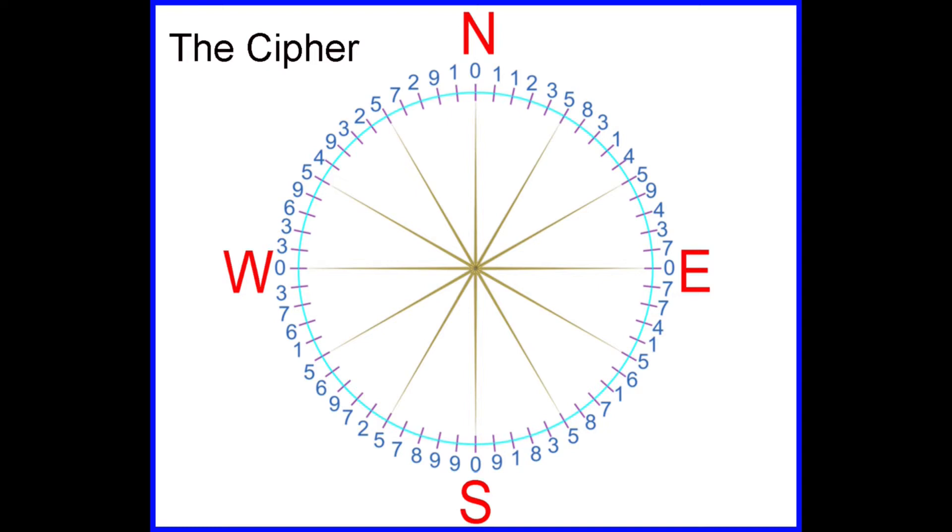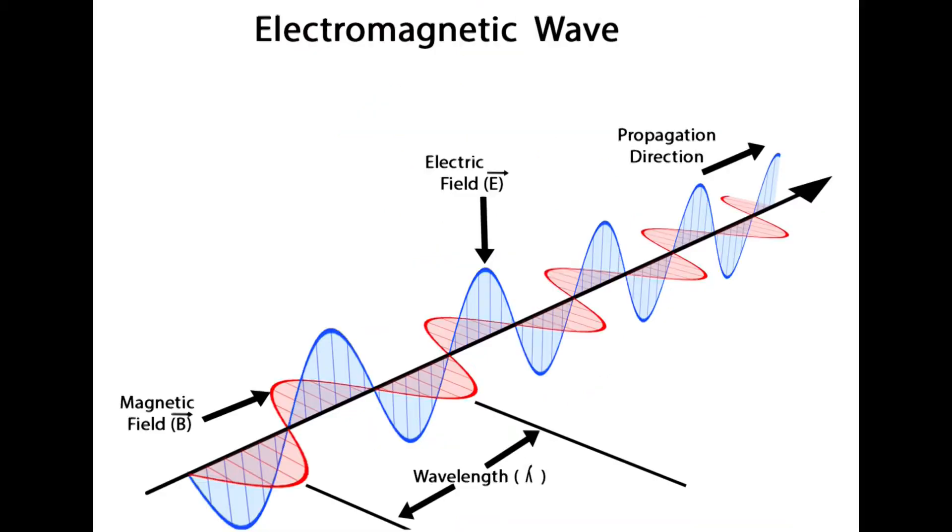Some people cannot imagine how this Fibonacci 60-digit circle could possibly be a wave of energy or represent a wave or quanta of light. When scientists study light, they find that light is an electromagnetic wave made up of an electrical field and a magnetic field running perpendicular or at 90 degrees to each other, as seen in the image.